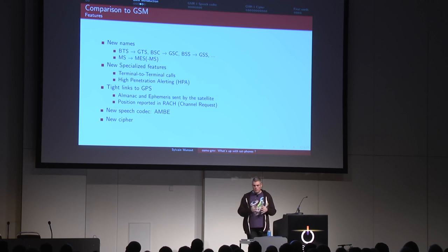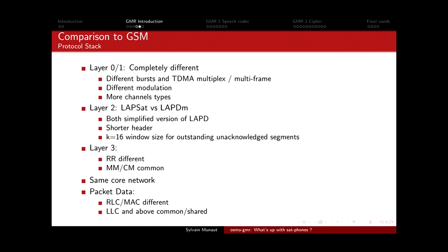Compared to GSM, GMR changed the speech codec to something called AMBE and changed the cipher - they're not using A5.1, A5.2, or A5.3; they use something called A5.GMR1. Looking at the protocol stack, anything in the lower layers - radio modulation, TDMA frame structure - is completely different because you have to deal with the particulars of satellite communication. You find the same concepts like control channels and broadcast channels, but their implementation is different.